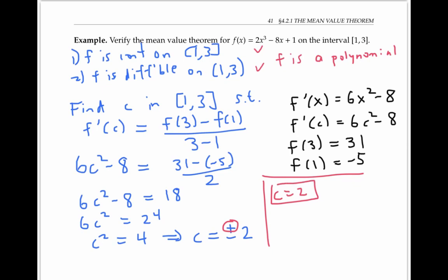So C equals 2 is the number we're looking for. And at C equals 2, F' is equal to 18, which is the average rate of change of F on the interval. We've verified the mean value theorem.